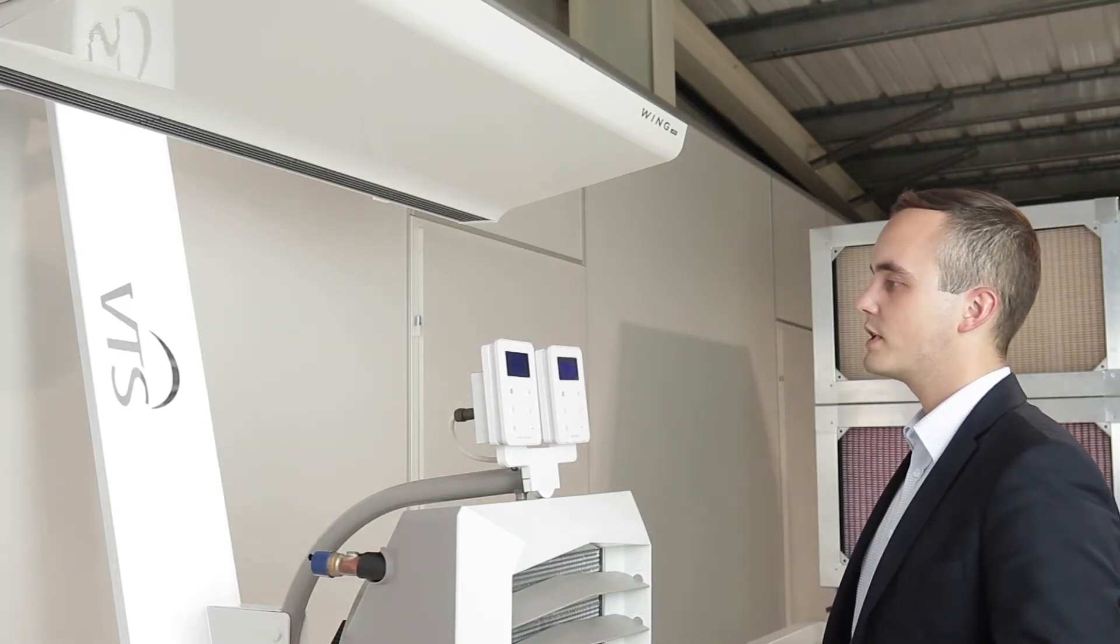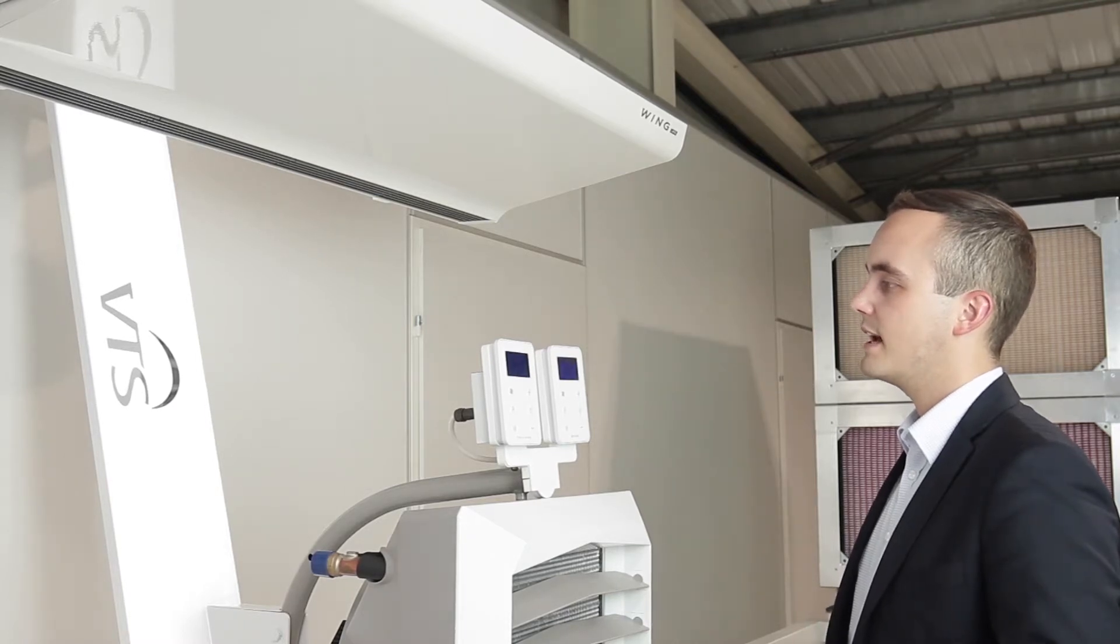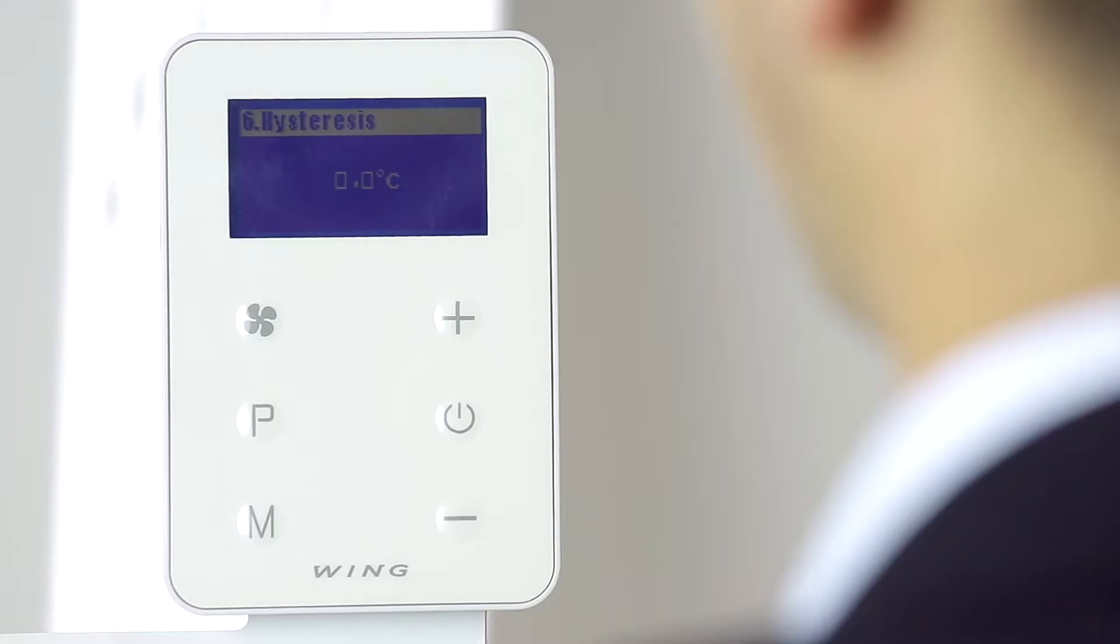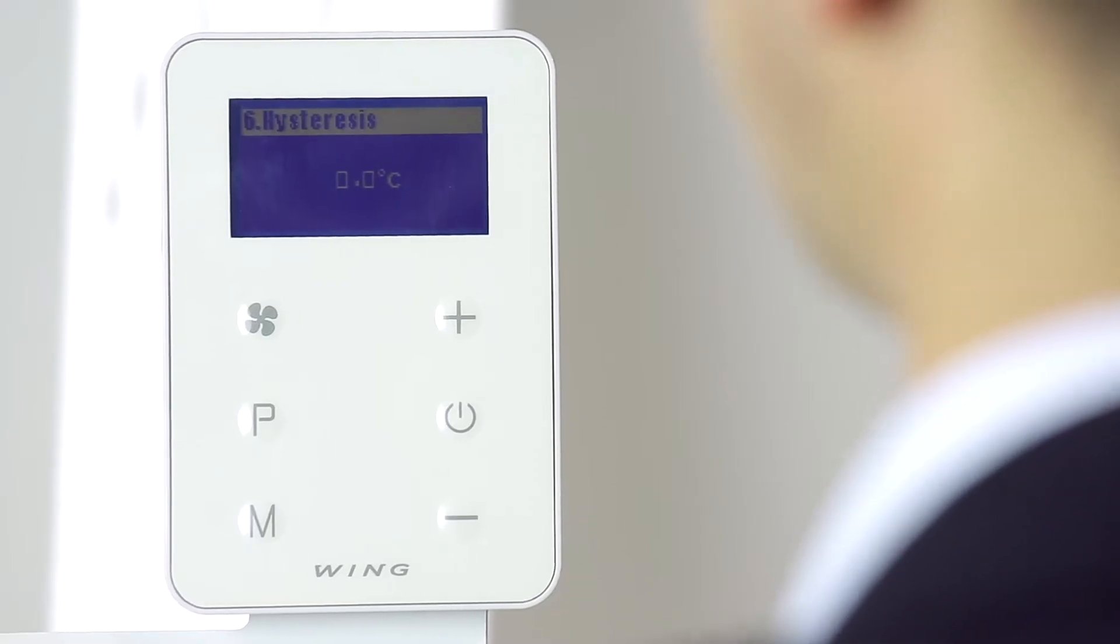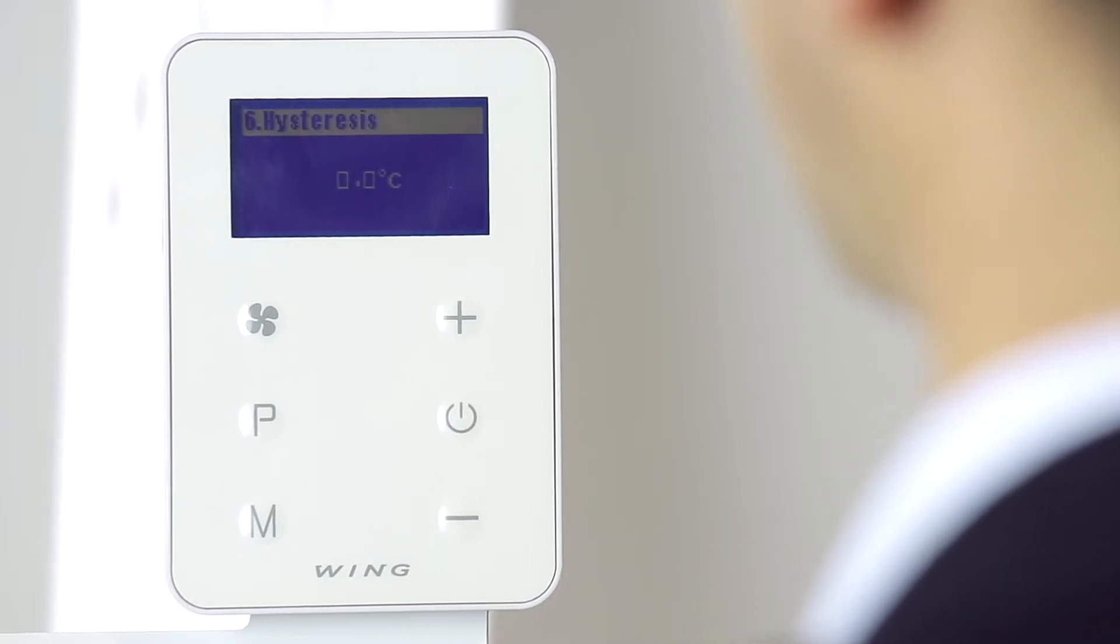The sixth advanced setting of the Wing EC controller is the hysteresis of the differential controller, which is the difference between the set temperature and the actual temperature of the room at which the device will switch on. For example,